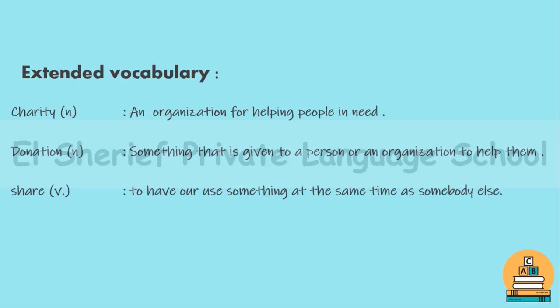Now we have some extended vocabulary. Number one: 'charity.' Charity means an organization for helping people in need. For example: 'I give much money to charity to help people.' Number two: 'donation.' Donation means something given to a person or organization to help them. For example: 'I gave the charity a big donation — it was about two million dollars.'